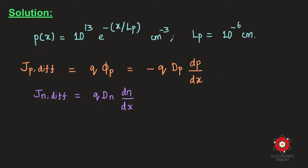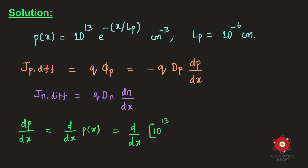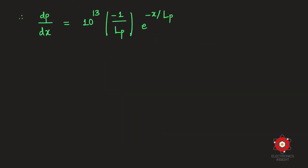To find the hole diffusion current density, we first estimate dp/dx. Since p(x) = 10¹³ · exp(-x/Lp), differentiating gives dp/dx = 10¹³ · (-1/Lp) · exp(-x/Lp).